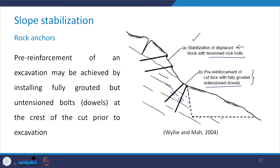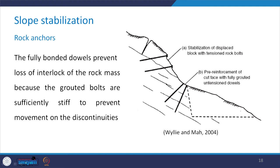These dotted lines show that the proposed excavation is going to take place in this particular manner. Before the excavation is carried out, you install these un-tensioned dowels in this manner and then carry out the excavation. This stitching by means of pre-reinforcement will make the slope stable even after the excavation of this portion. The fully bonded dowels prevent the loss of interlock of the rock mass, because the grouted bolts are sufficiently stiff to prevent any movement on the discontinuity.